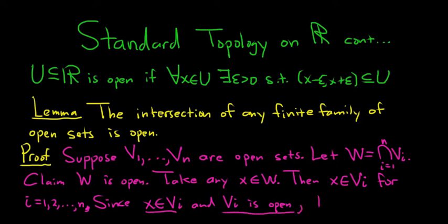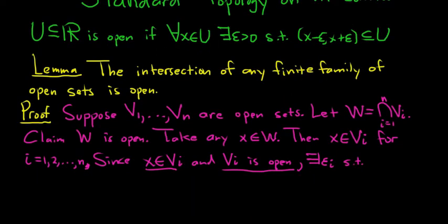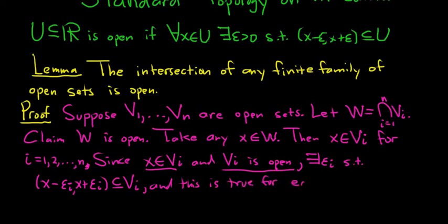there exists some, say, epsilon i, such that we have a neighborhood about x contained in V sub i. And this is true for each i. So this statement is true for each i. So for each i, this is true. So we have a finite number of epsilons.